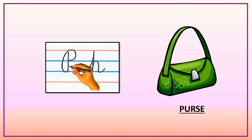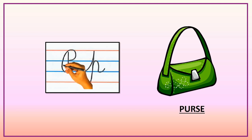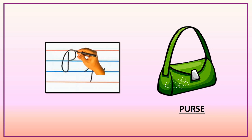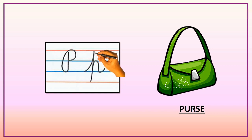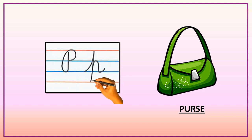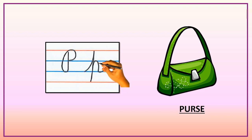Turn left and go up to the first red line. Turn right, curve to first blue line. Come down to second red line. Go up again on the same line to first blue line. Turn right, curve down and out on second blue line.